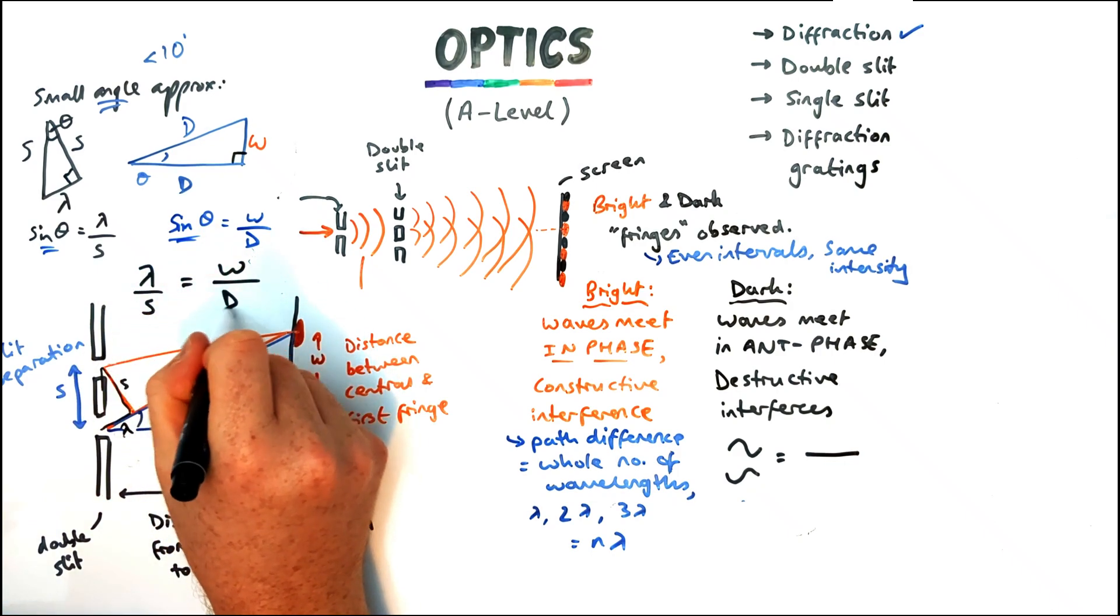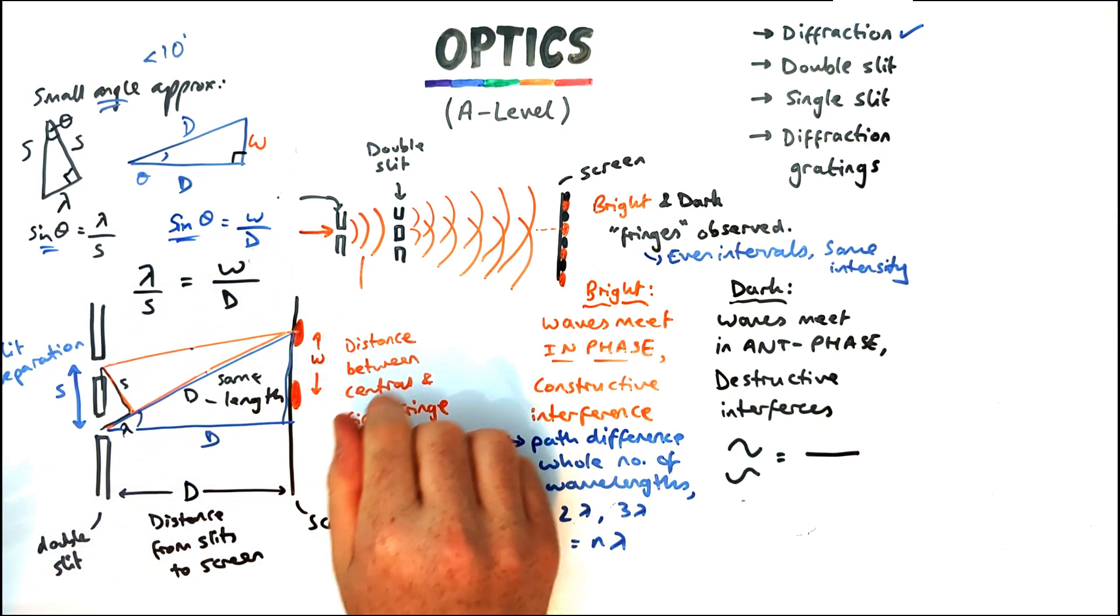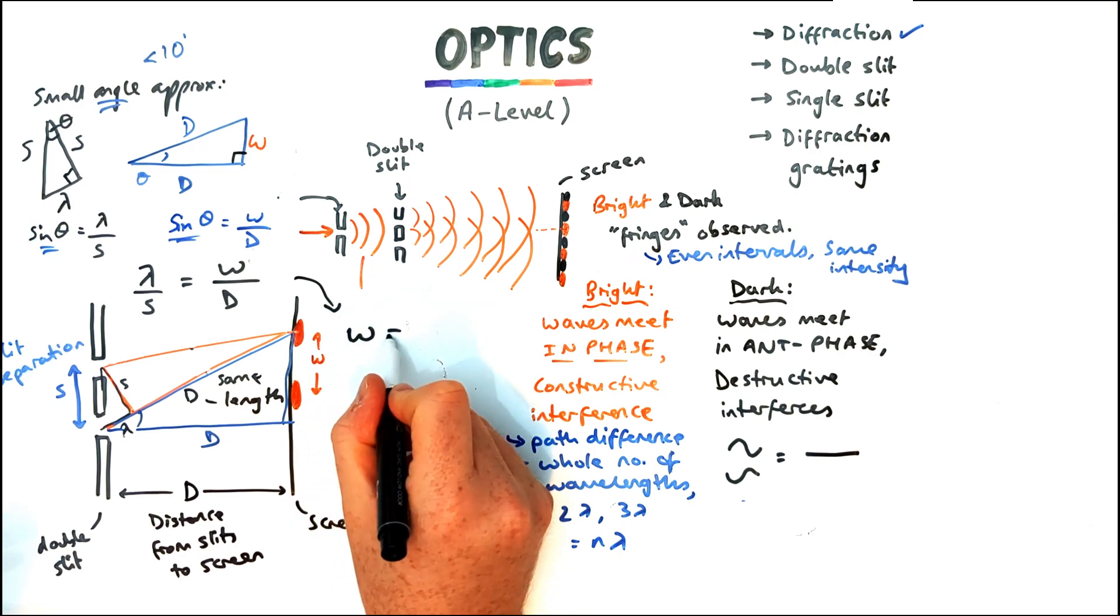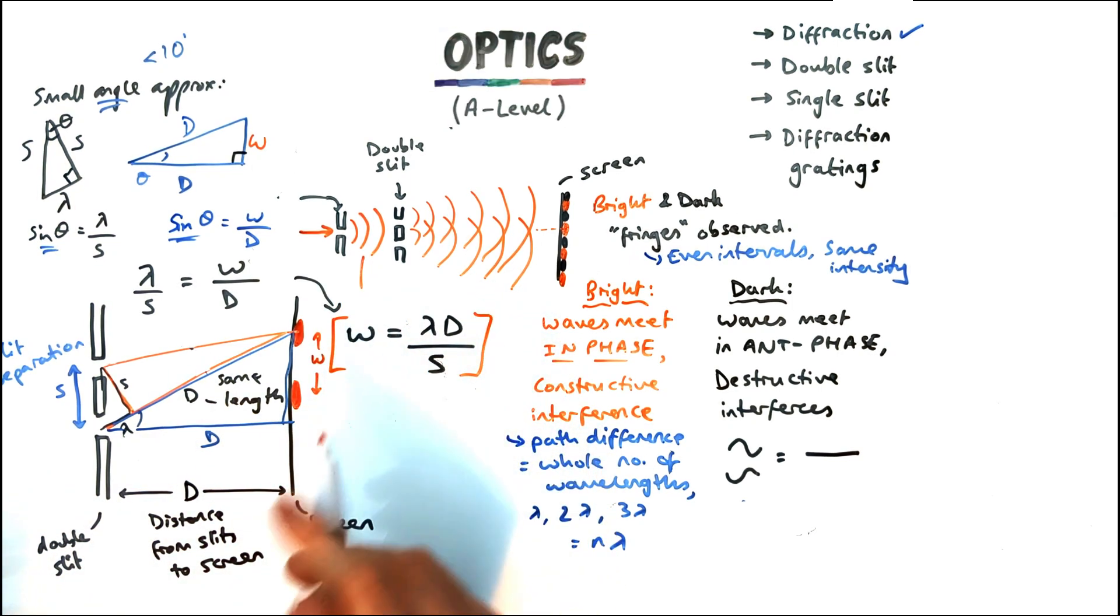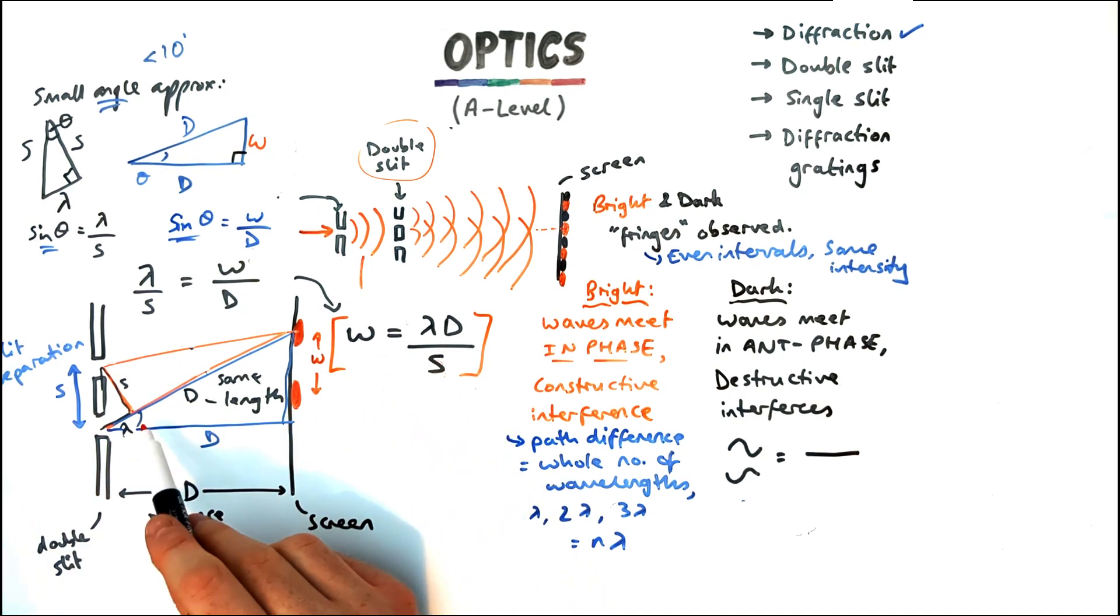Lambda over S equals W over D and rearrange it for W. The width of the fringes equals the wavelength times by the distance from the slit to the screen divided by the slit separation. So that's our equation for the double slit formula.